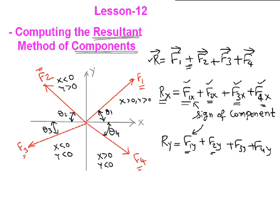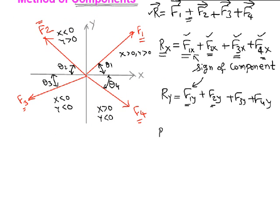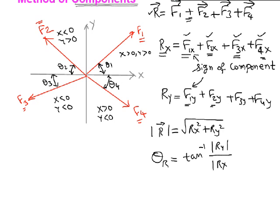So appropriately you will find the signs of these components and you sum them up. Once you sum them up, the magnitude of the resultant is given by the formula square root of rx square plus ry square, and the angle which this resultant makes with x axis you can indicate as tan inverse of absolute value of ry divided by absolute value of rx. And you can find out the quadrant in which this r bar lies depending upon the signs of rx and ry.